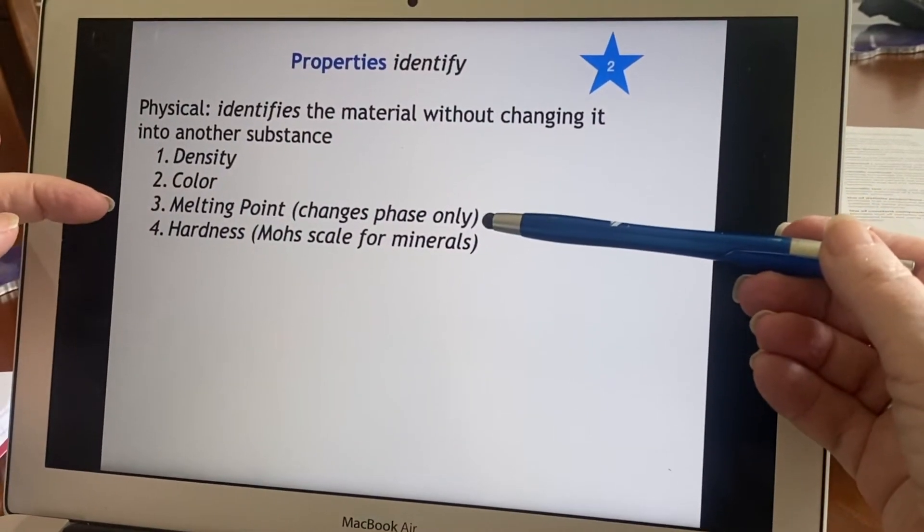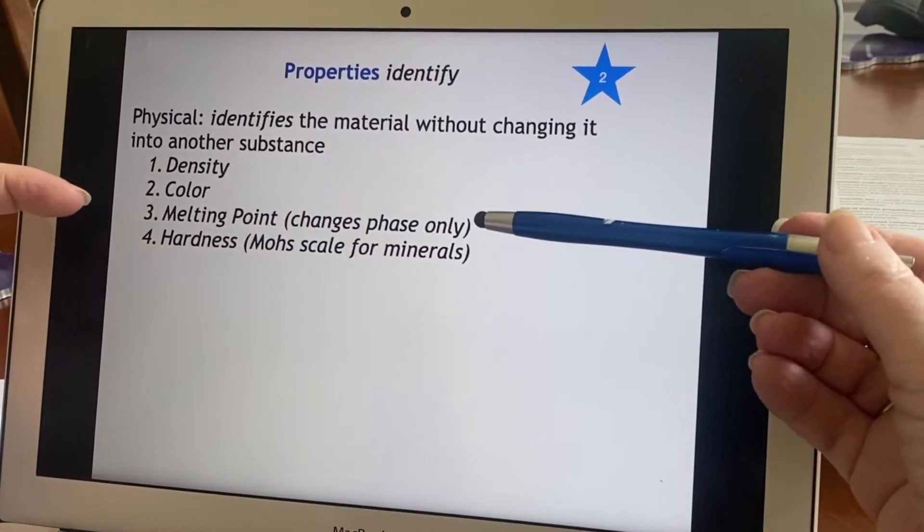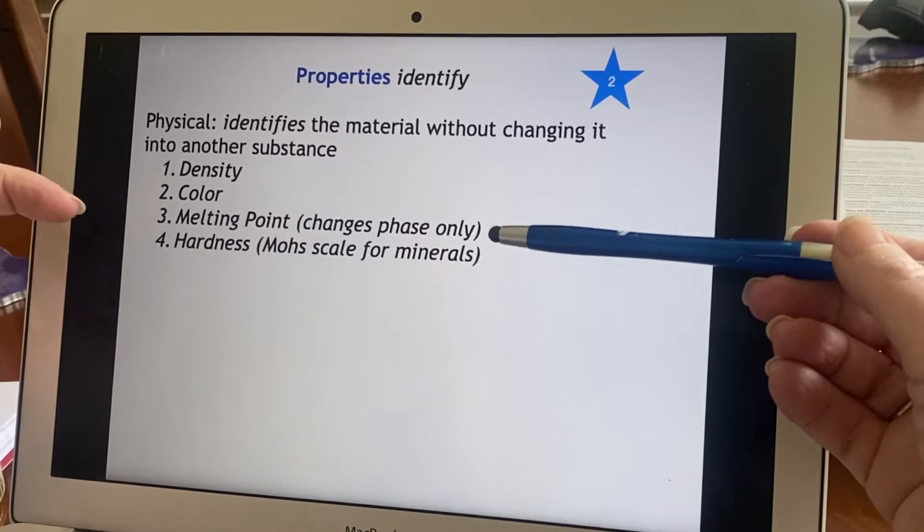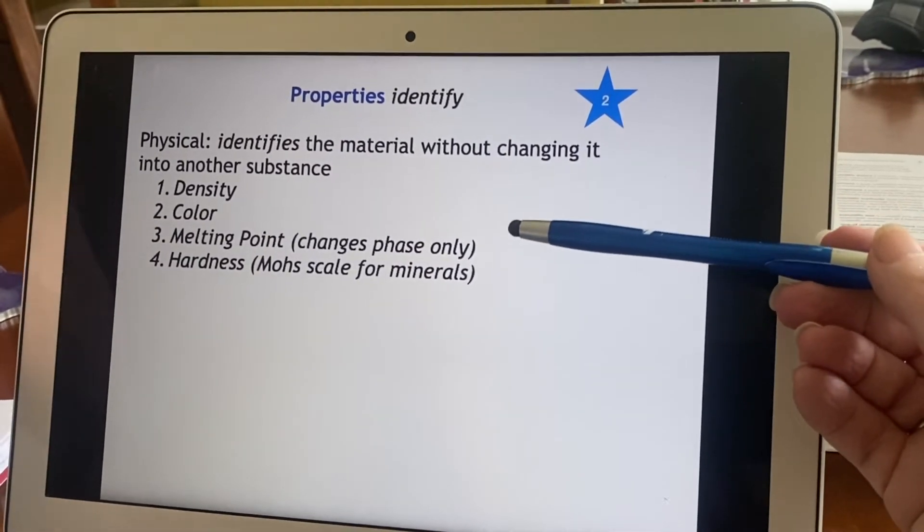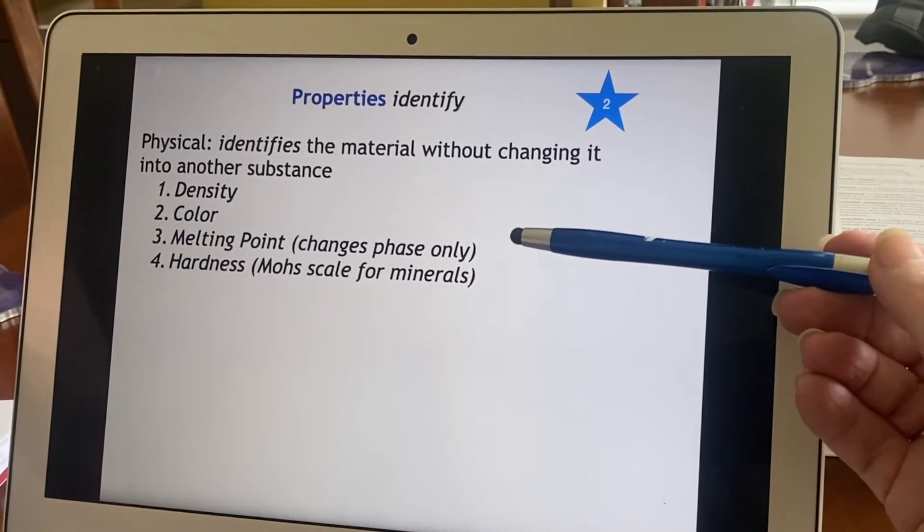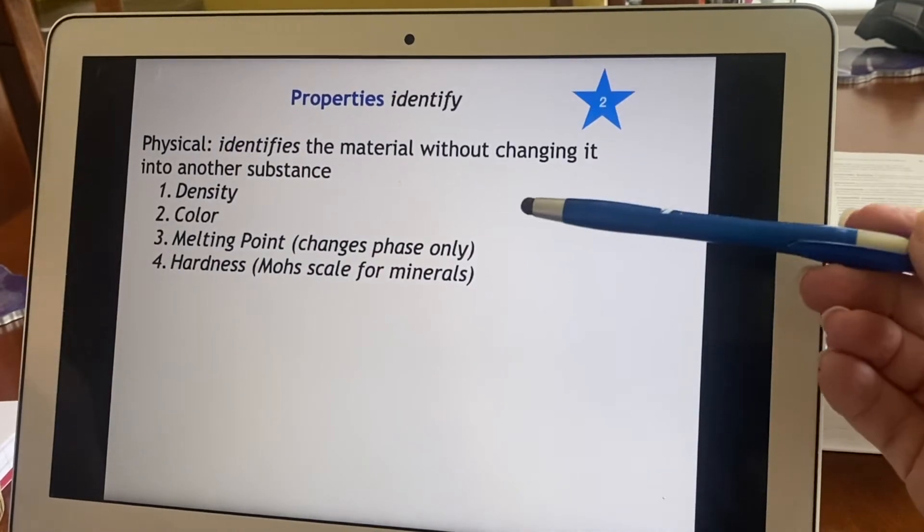Then melting point, because you might change the phase of it, but you haven't changed how things are attached together, how the different atoms are attached together. So water in ice is still H2O, water in liquid form is still H2O, and water as a gas is still H2O.